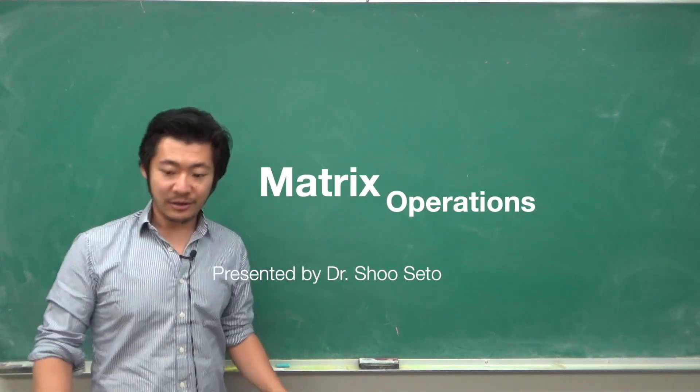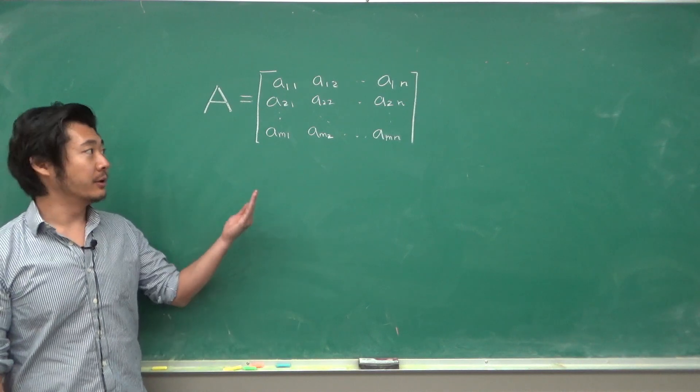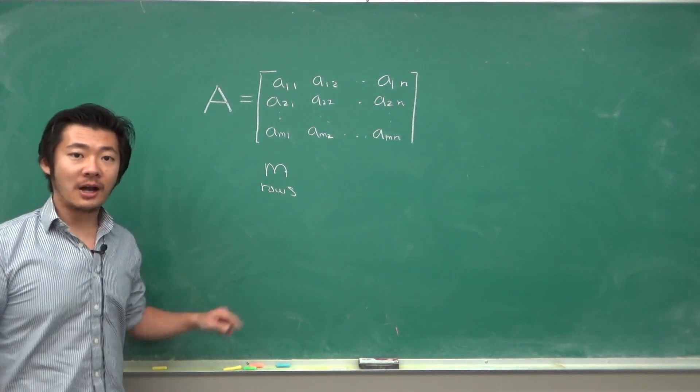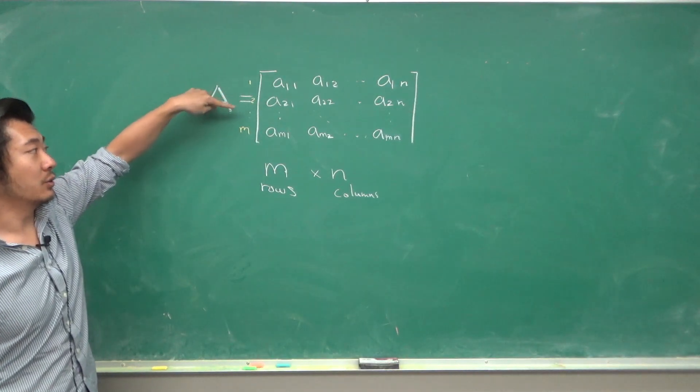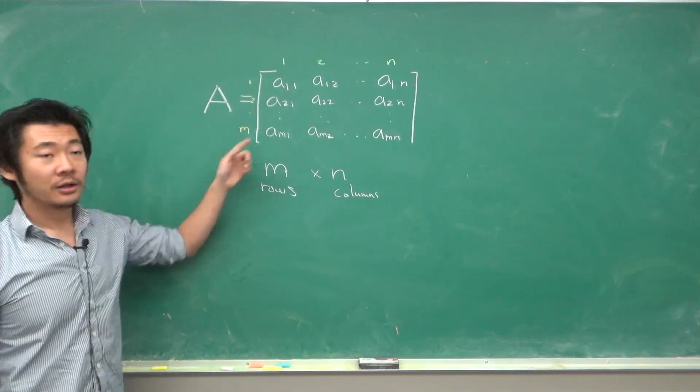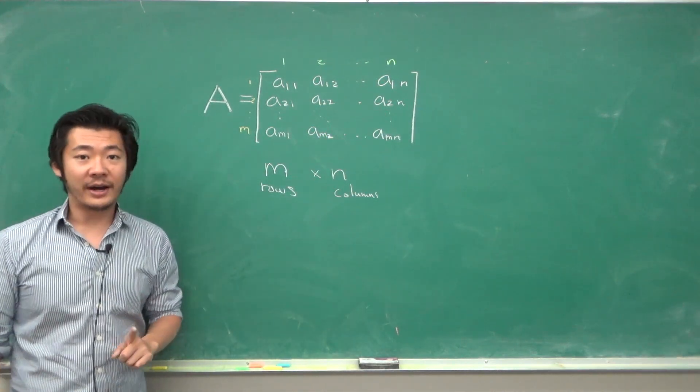In this video we will talk about a matrix. A matrix is basically just an array of numbers. There's m rows and n columns, where the rows are the horizontals—there are 1, 2, up to m rows—and the columns are the verticals, so there are 1, 2, up to n.